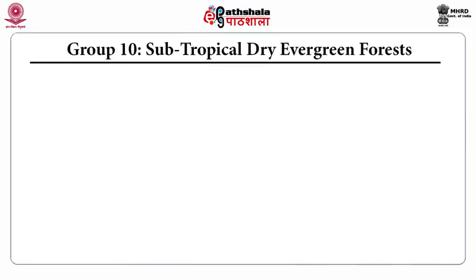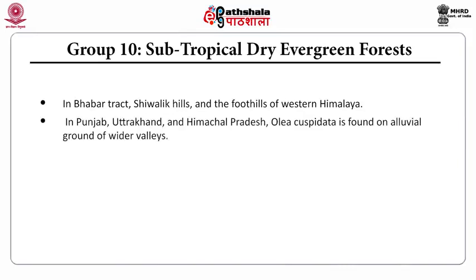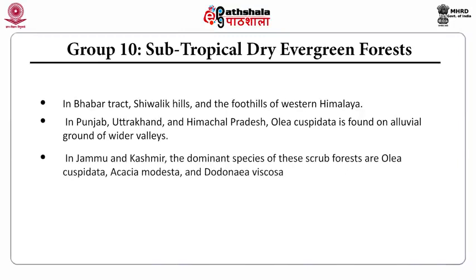Group 10 is the sub-tropical dry evergreen forests in the Bhabhar tract, the Siwalik hills, and the foothills of Western Himalaya in Punjab, Uttarakhand, and Himachal Pradesh. Olea cuspidata is found on alluvial ground in wider valleys. In Jammu and Kashmir, the dominant species of these scrub forests are Olea cuspidata, Acacia modesta, and Dodonaea viscosa.